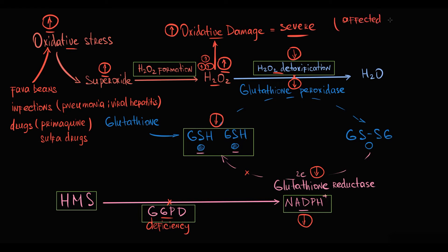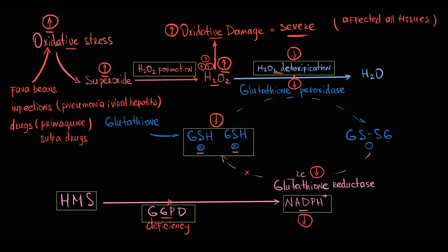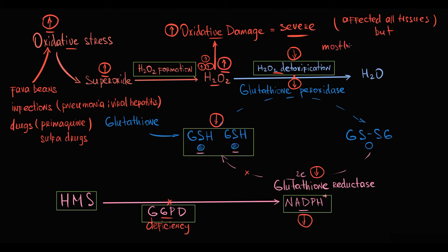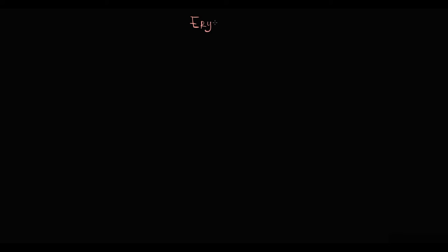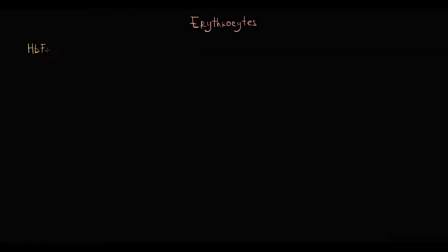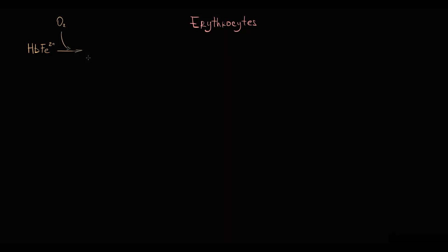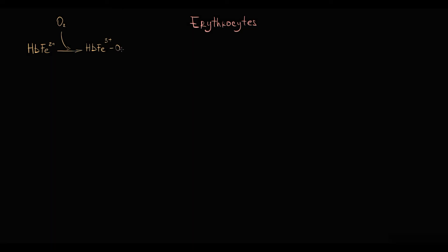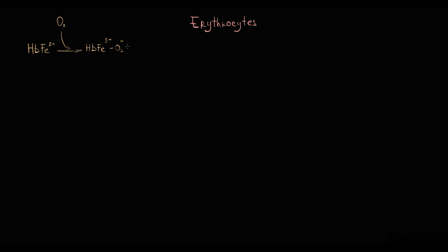The cells most susceptible to any increase in hydrogen peroxide are erythrocytes. Erythrocytes are the most susceptible cells to oxidative injury because they contain hemoglobin, whose major structural component is iron in the +2 state. The function of hemoglobin is to pick up oxygen and deliver it to tissues. When hemoglobin picks up oxygen, it binds oxygen to iron, and oxygen oxidizes iron to the +3 state, resulting in formation of a ferric superoxide-anion complex.